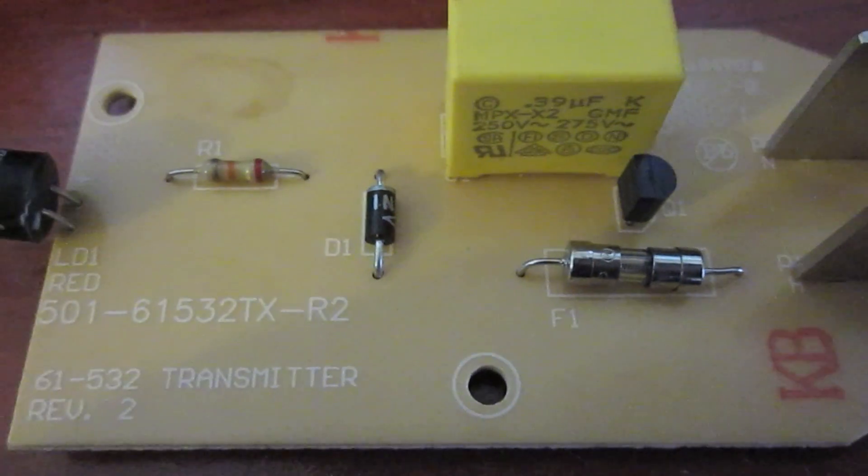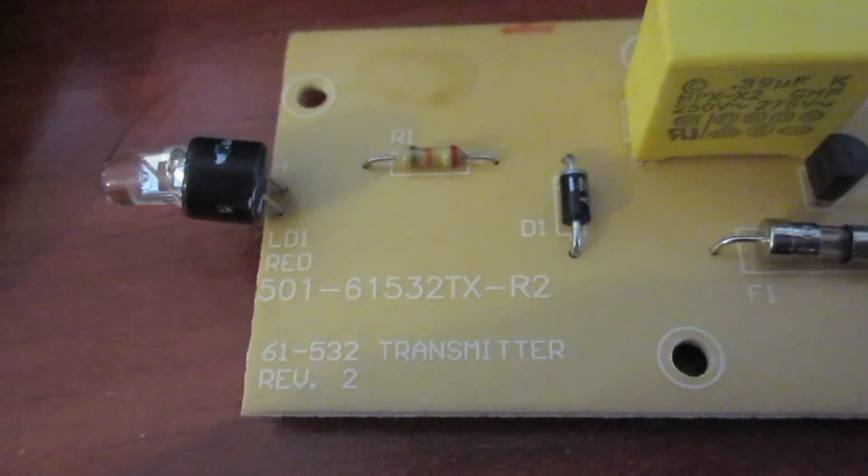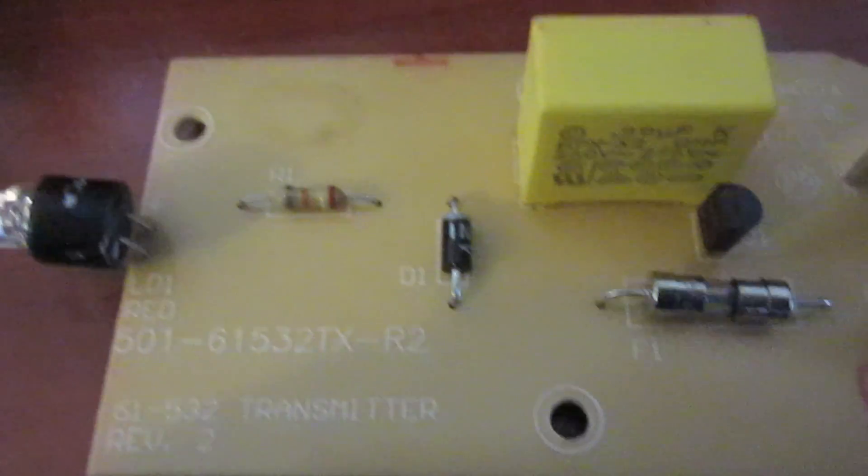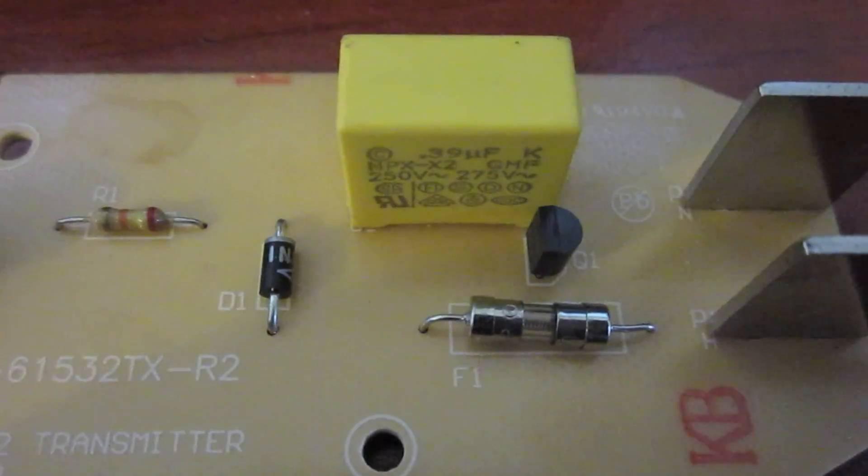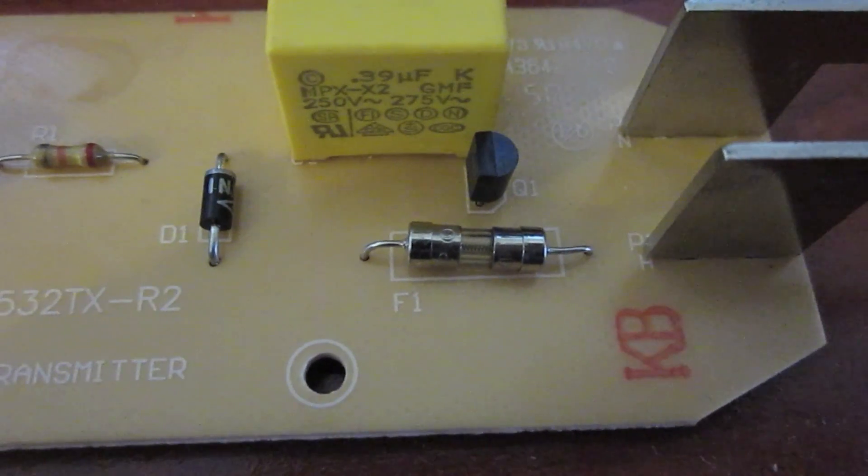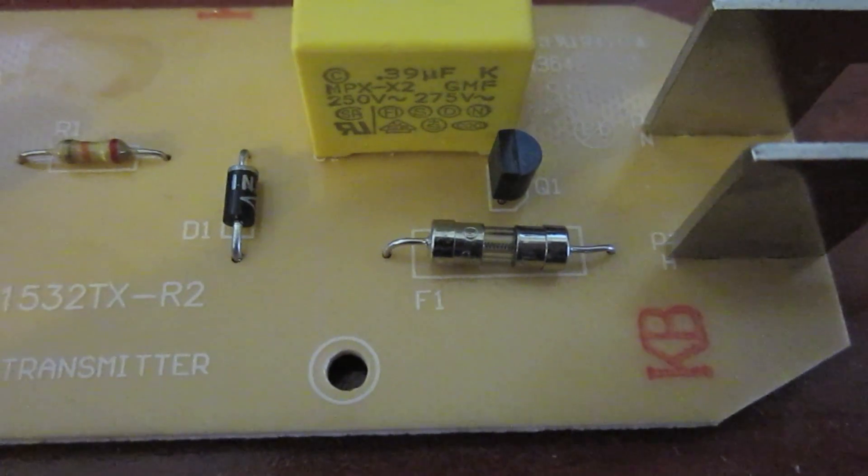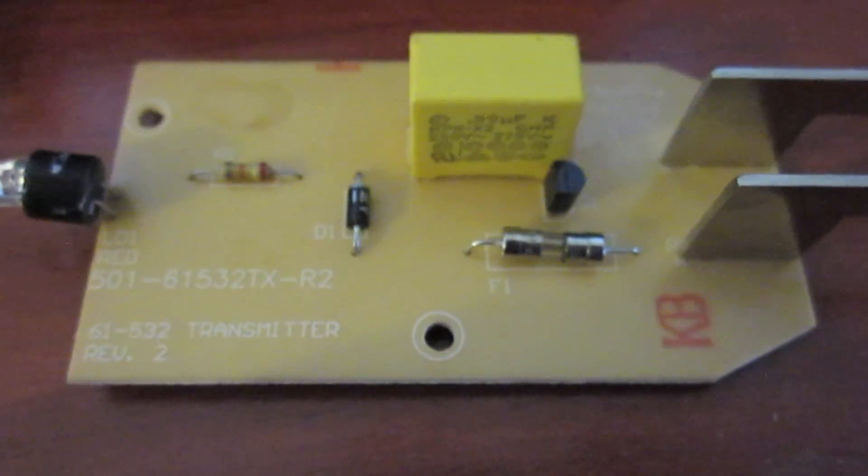Okay, you can see it's very simple. LED on the left. Resistor for the LED. Diode. Capacitor. Some silicon called Q1. A fuse. And just generic prongs. Pretty simple.